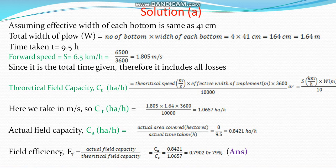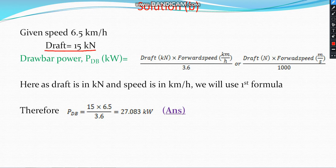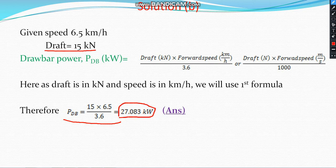Now for the second part, to find the drawbar power. The given speed is 6.5 km per hour and the draft is 15 kN. Drawbar power equals draft multiplied by forward speed. Since draft is in kilonewtons and speed is in km/hr, we divide by 3.6 to convert: DBP = 15 × 6.5 / 3.6 = 27.08 kilowatts. This is the drawbar power.